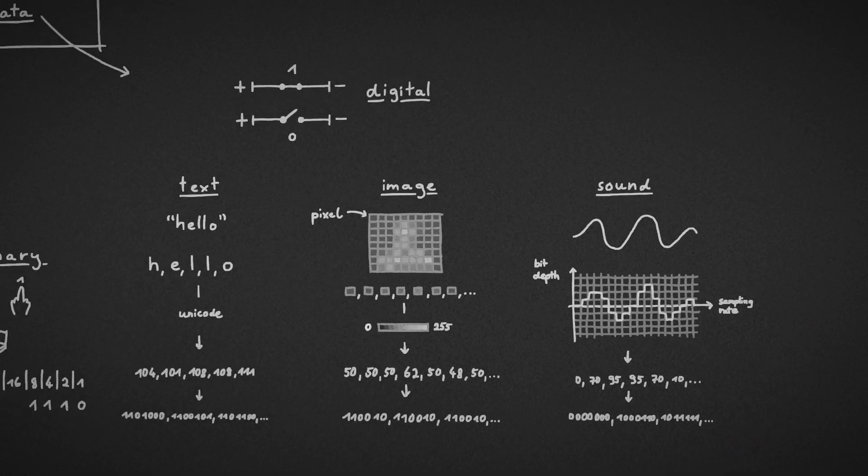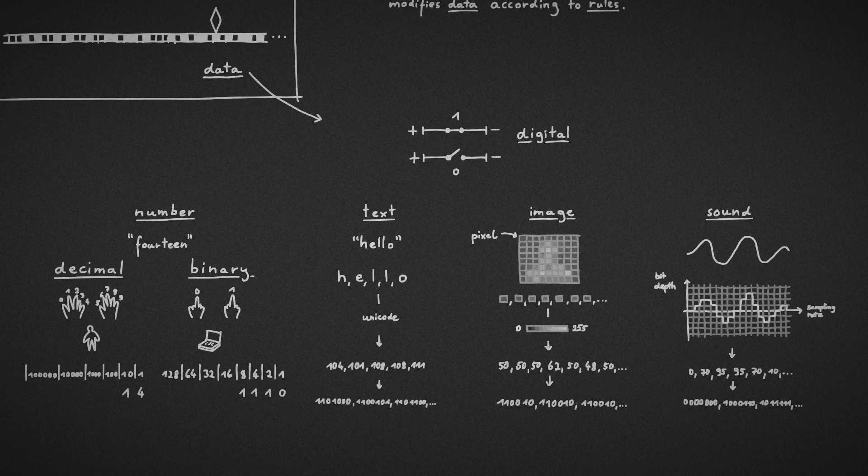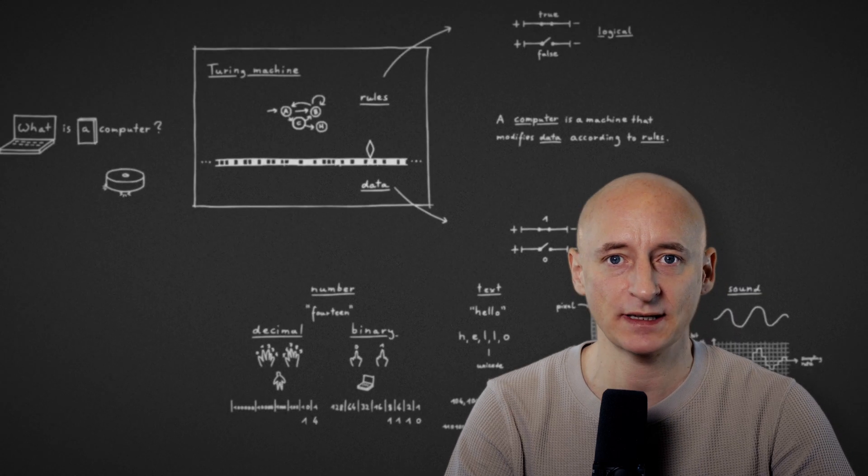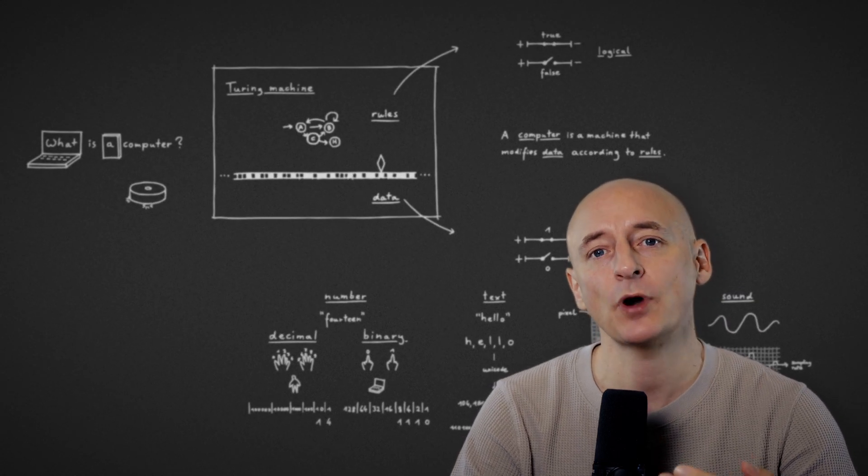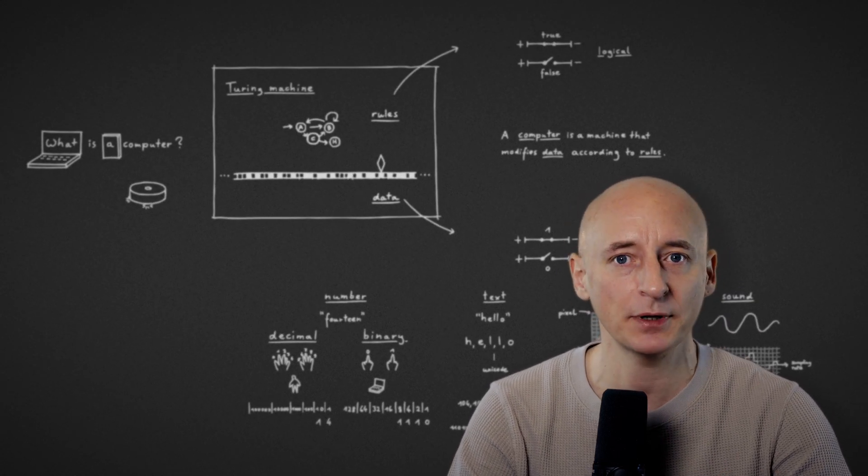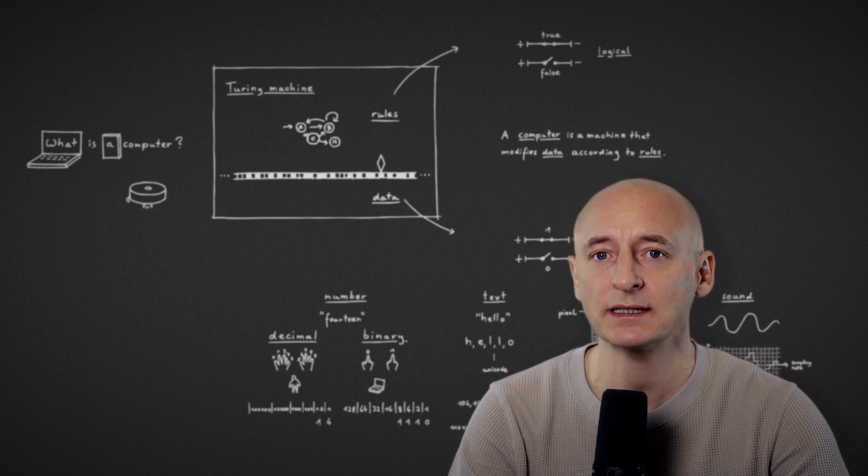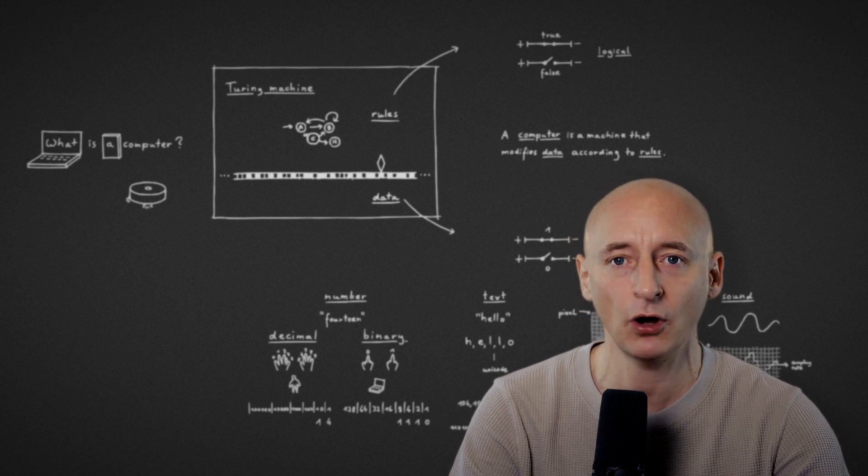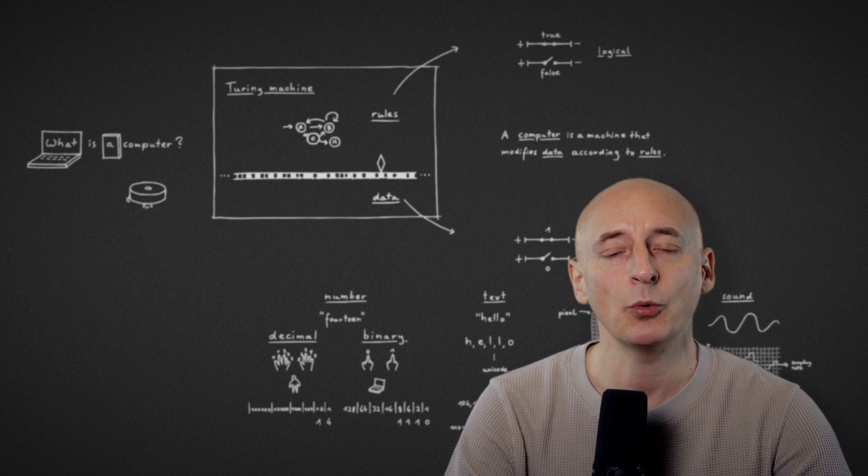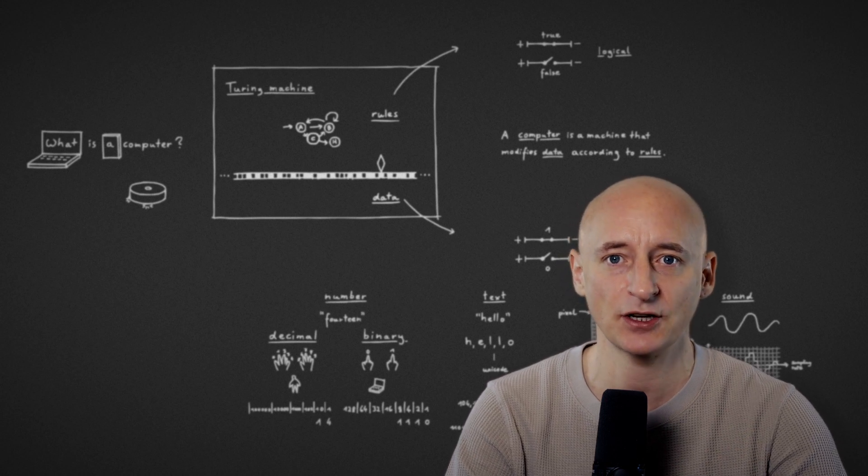I just showed you a couple of ways of how to translate information into numbers. Of course there are many more. But the idea is always the same. We find a way to represent data as binary numbers, which can ultimately be translated into states of electricity on and off. We call this translation into numbers digitization.